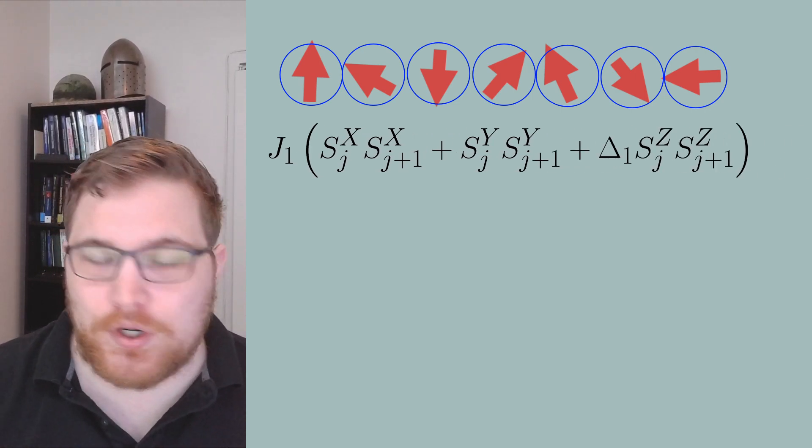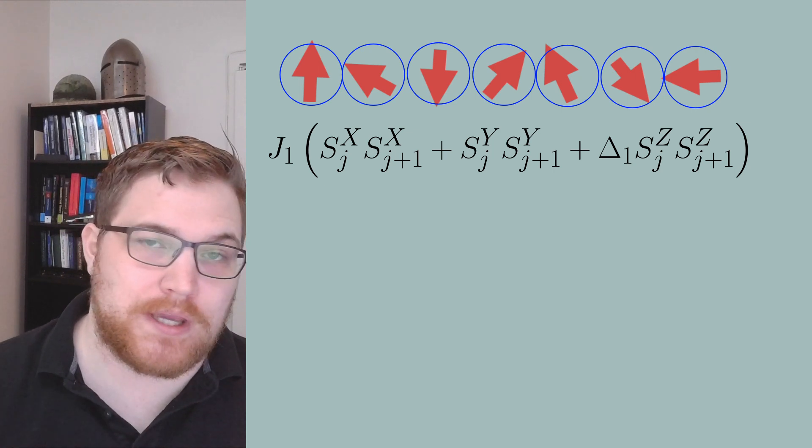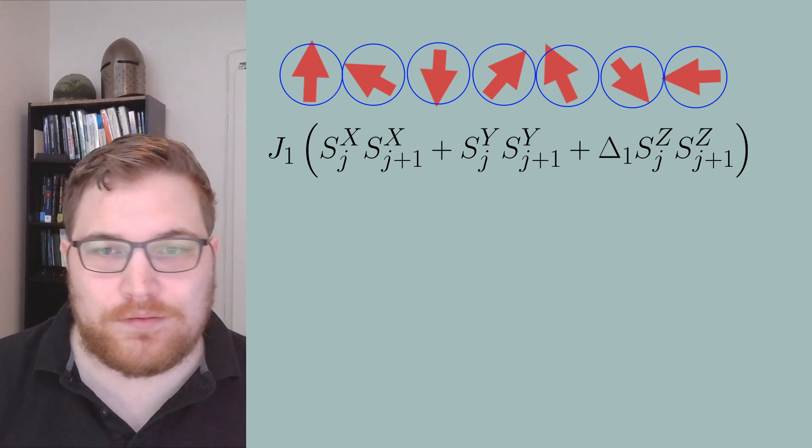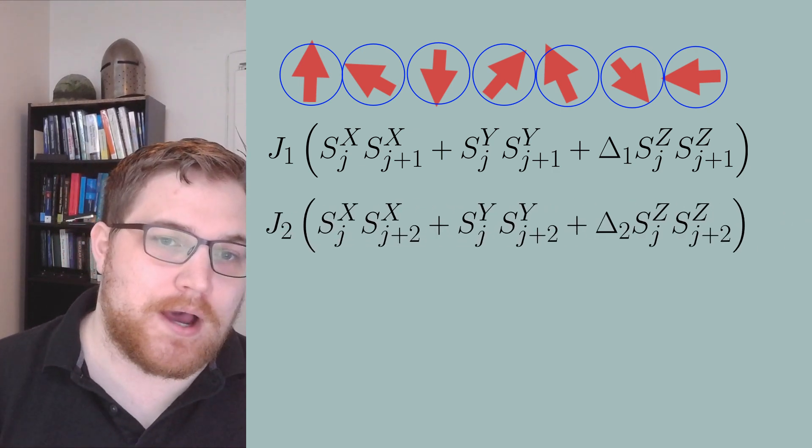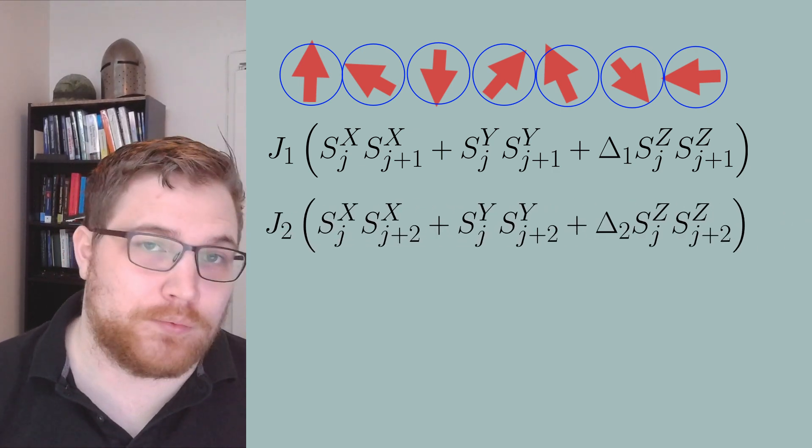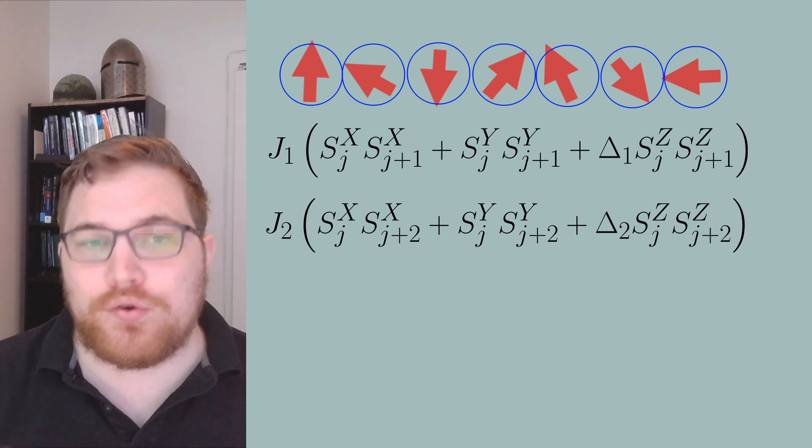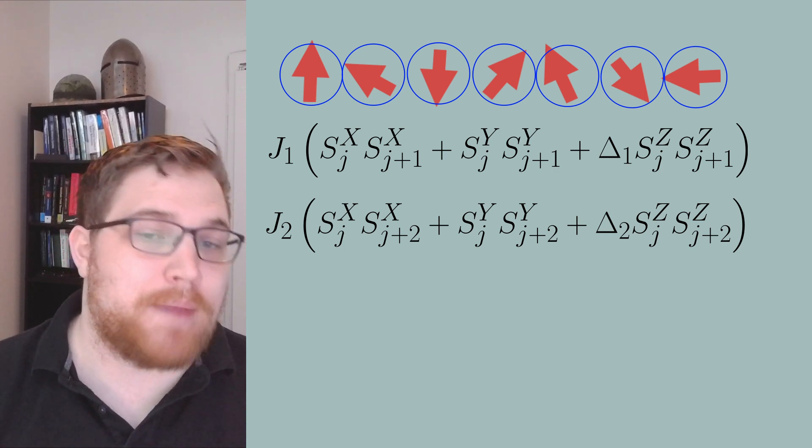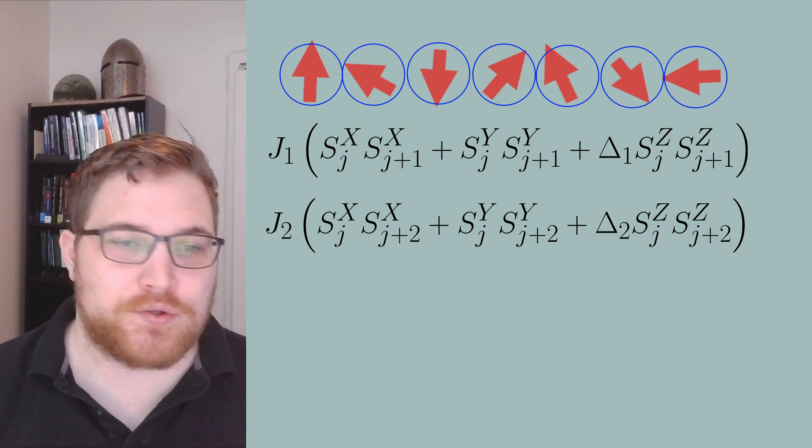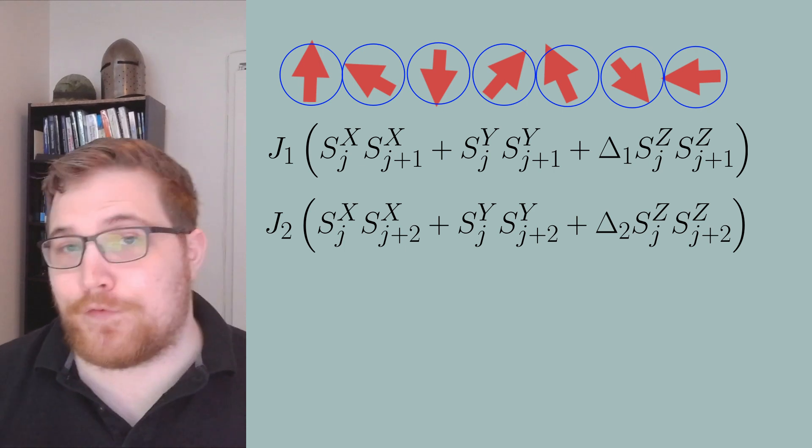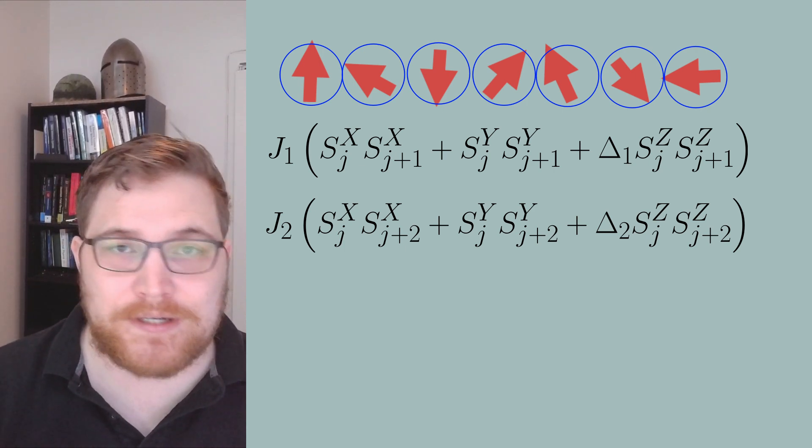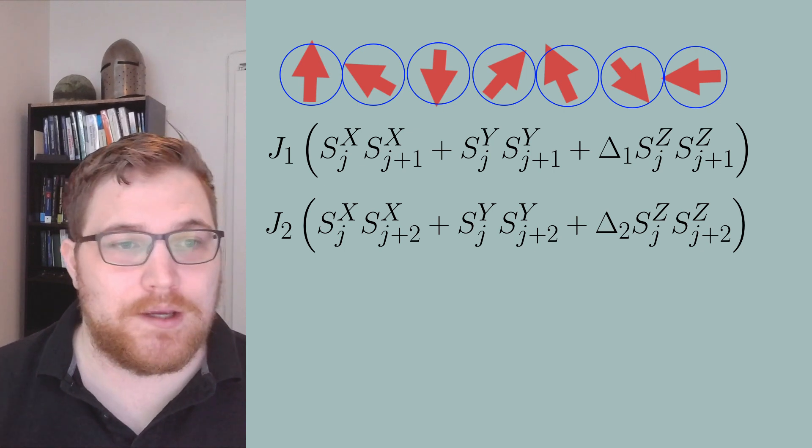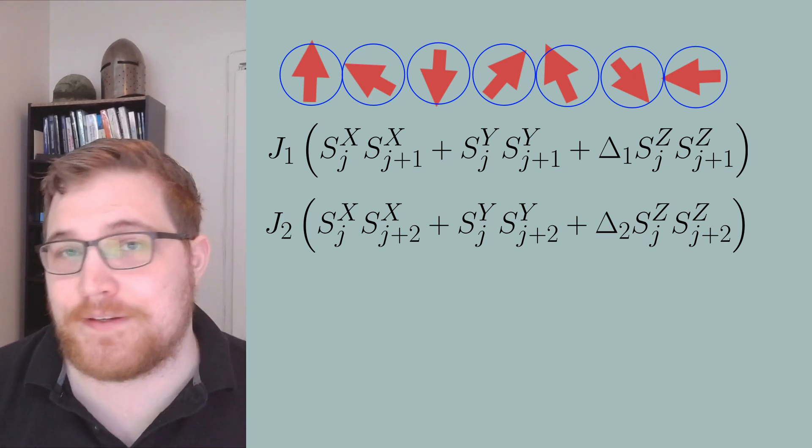We will likewise have next nearest neighbor interactions. So we'll have terms like the following expression. The model is going to be periodic on the boundaries to allow for some extra block diagonalization. So for all of the examples today, we are going to track the pauli-z matrix as our observable A, and we will put it on lattice site 2.